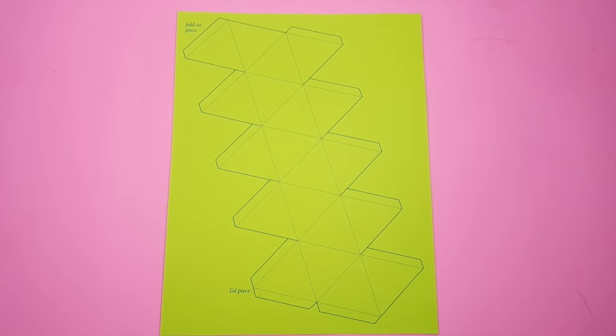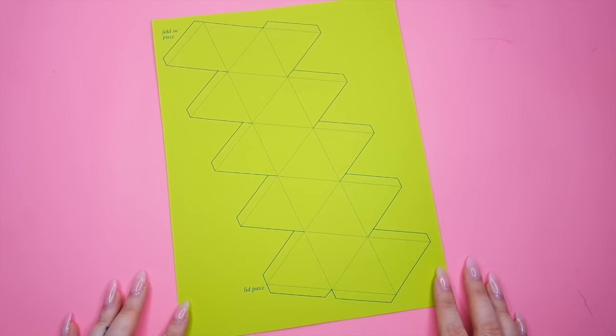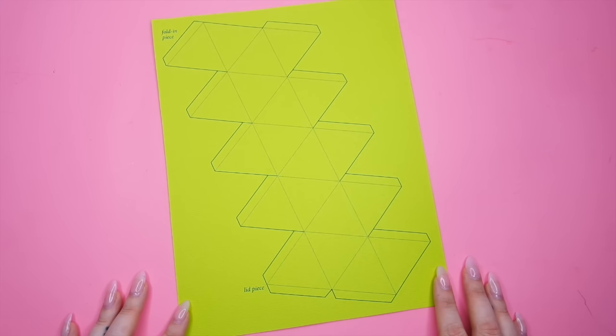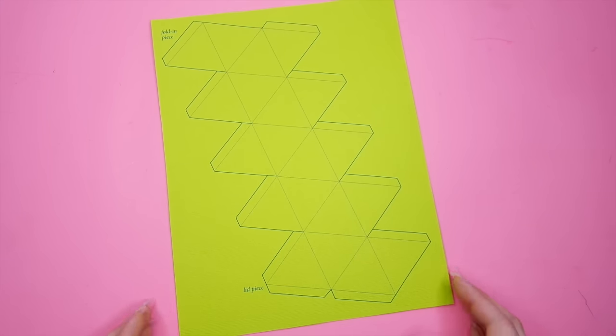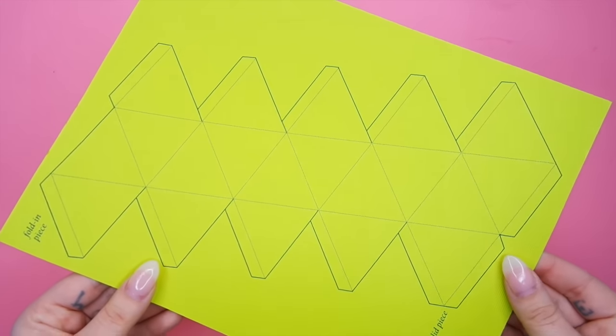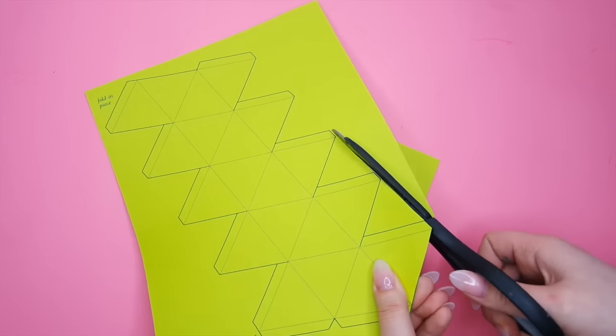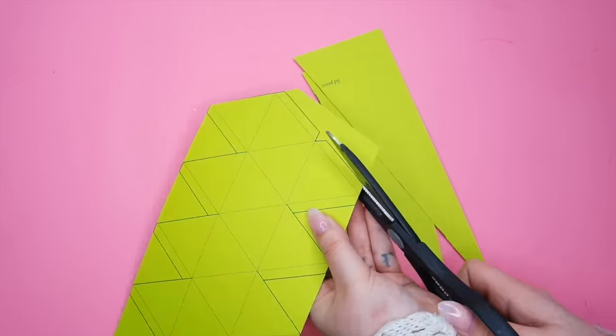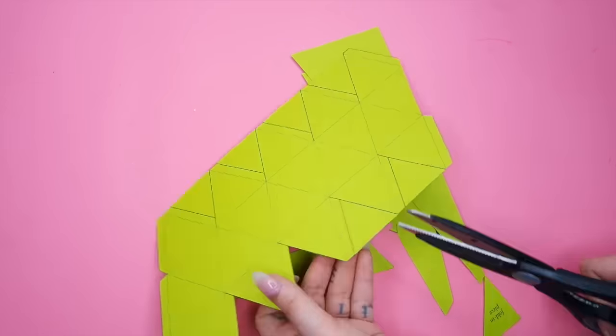I've printed out our large geometric ball. The templates will be in the down bar so you can open, save, and print them out. It's just on a regular 8.5 by 11 sheet. Now I'm cutting along those lines.